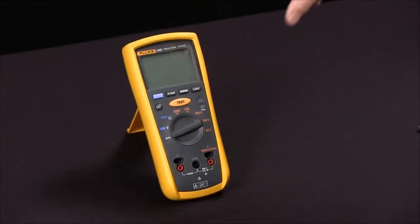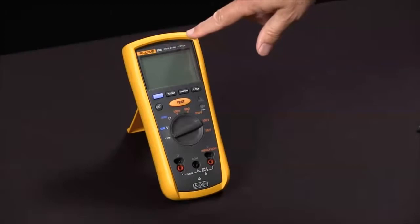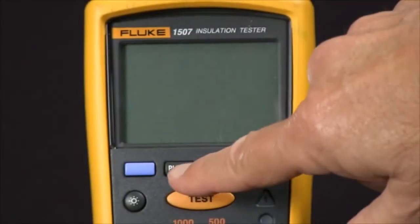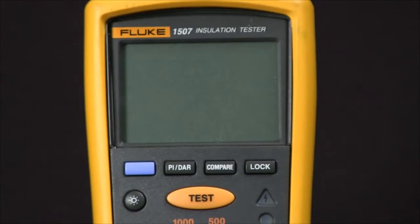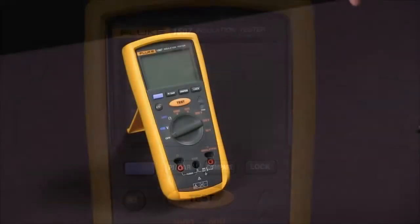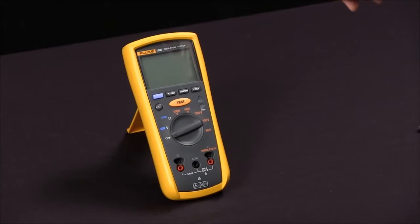To use our Fluke 1507 Insulation Tester, we have two automated functions: polarization index, which is a 10 minute to 1 minute ratio time test, and dielectric absorption ratio, which is a 1 minute to 30 second test.